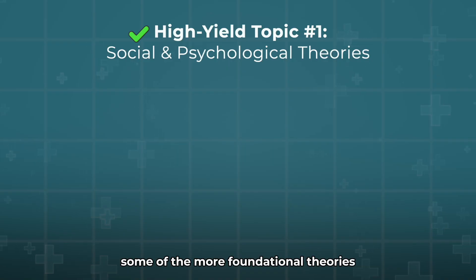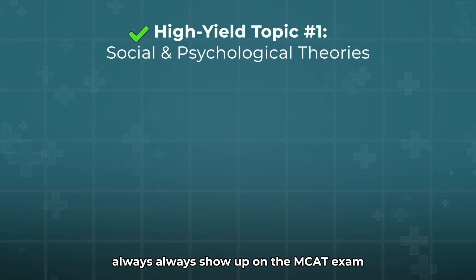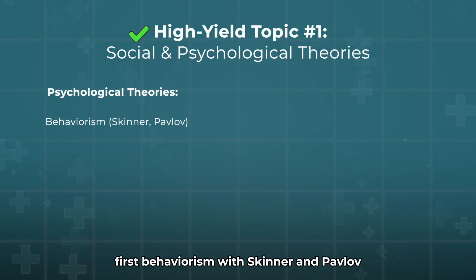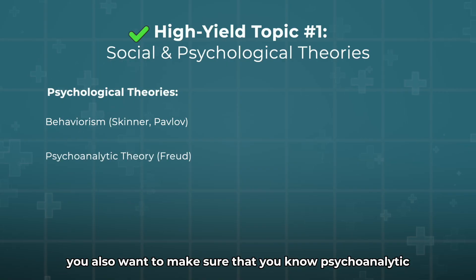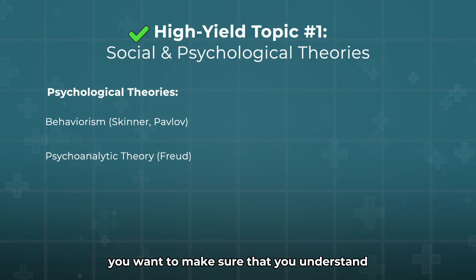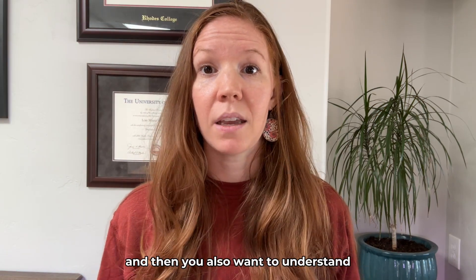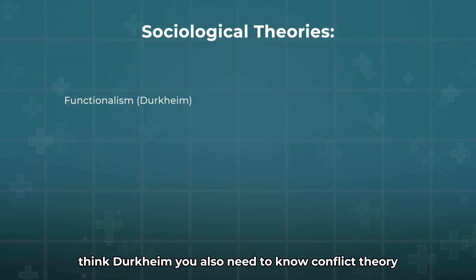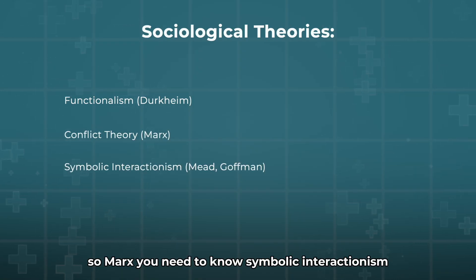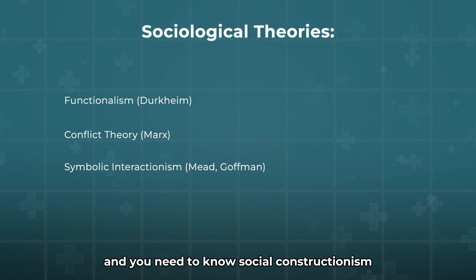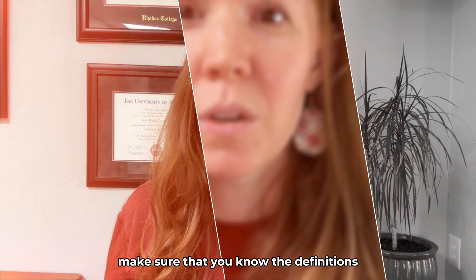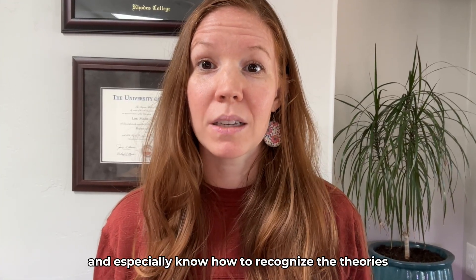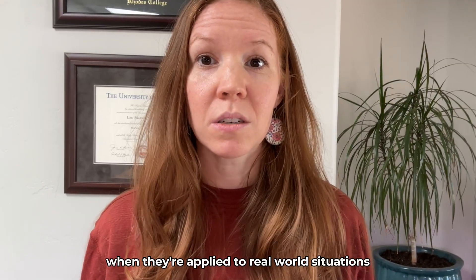You really want to understand some of the more foundational theories clearly — they always show up on the MCAT exam. The psychological theories you want to be solid on: first, behavioralism with Skinner and Pavlov; psychoanalytic theory, Freud's theory; and humanistic theory — think Maslow and Rogers. For sociological theories, you need to know functionalism (Durkheim), conflict theory (Marx), symbolic interactionism (Mead and Goffman), and social constructionism. Make sure you know the definitions, the major theorists, the key terms, and especially how to recognize these theories when applied to real-world situations and actual passages.